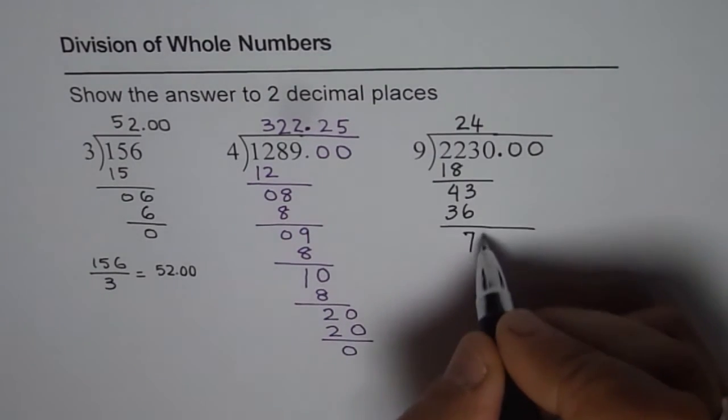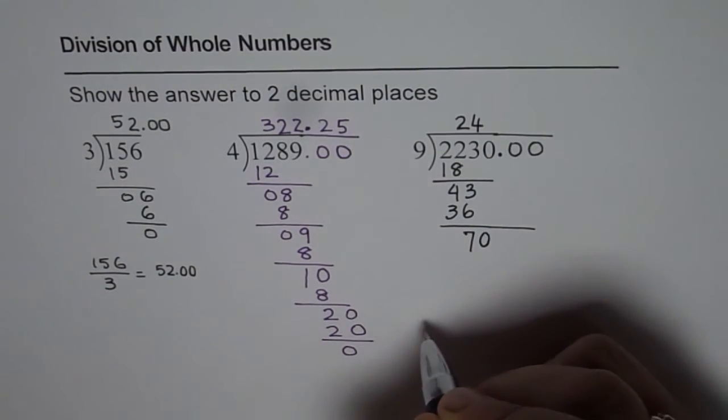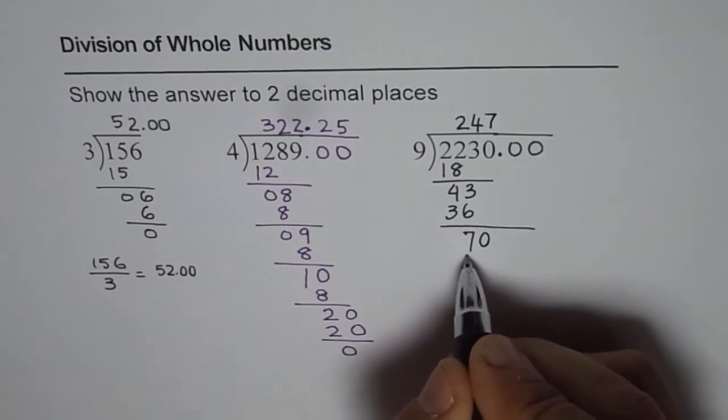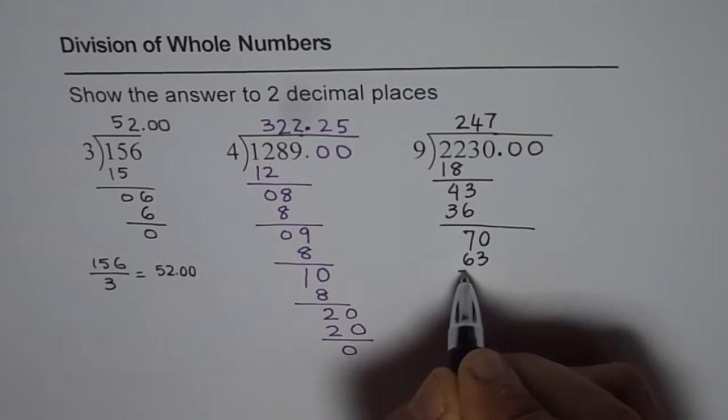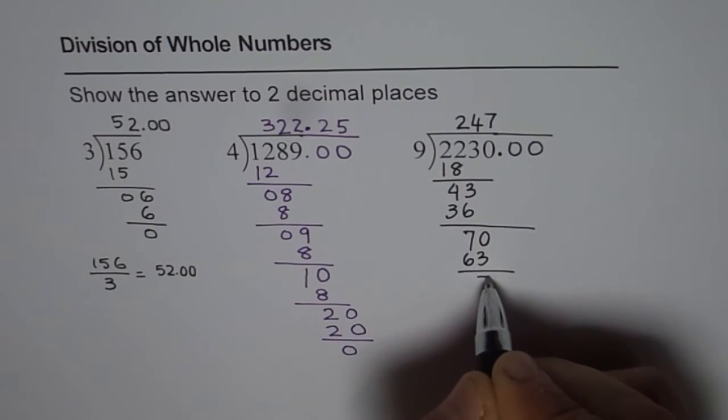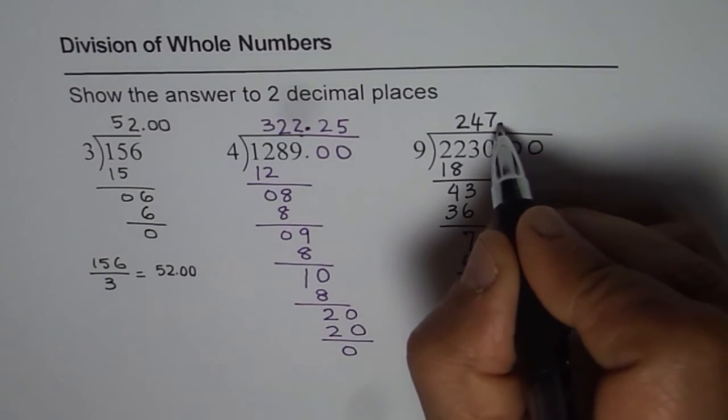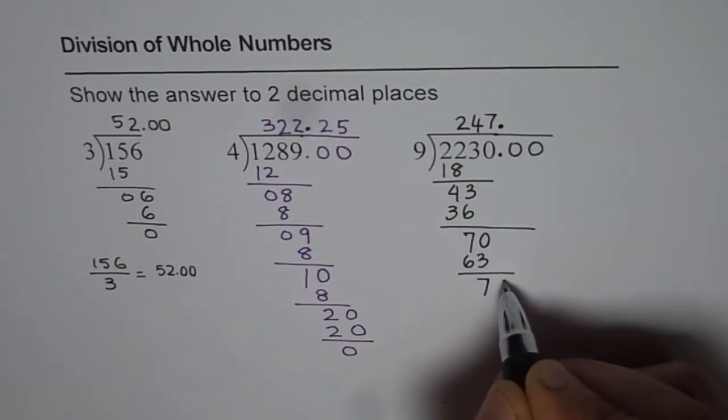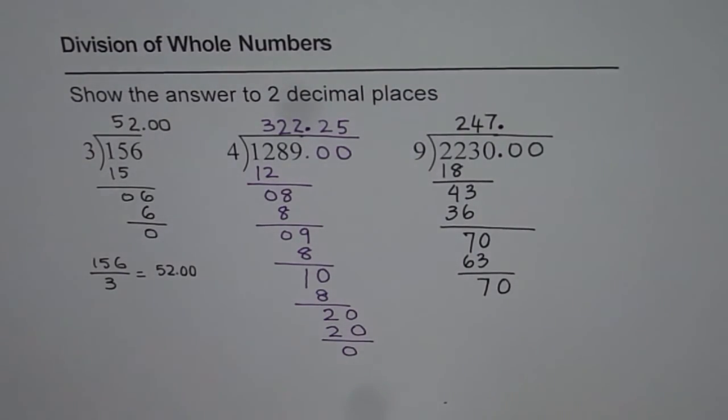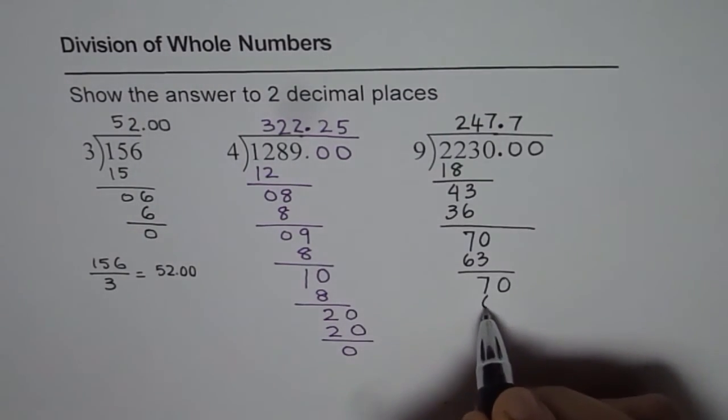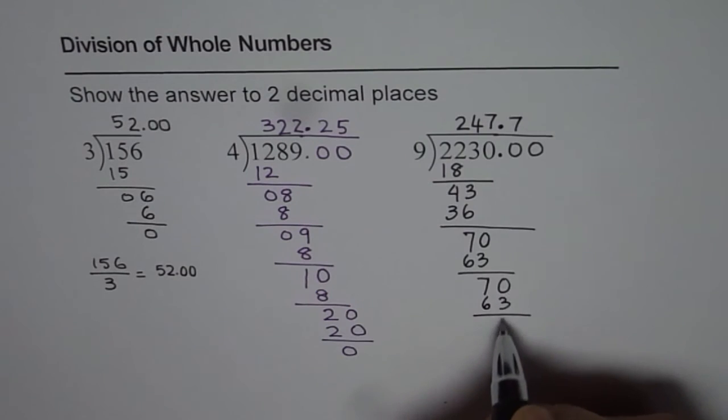Bring down the next number which is 0. 9 times 7 is 63. So we will write 63 here. We get 7 again. Now it is after decimal, so put decimal first. Then bring down the next number which is again 70. So we will write 7 again, 63, and then again 70. Bring down 0.